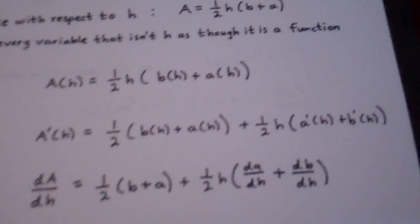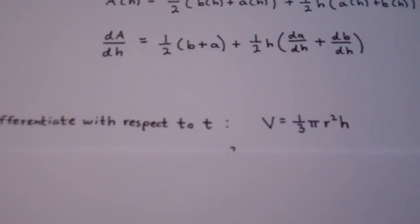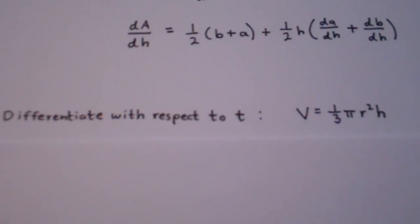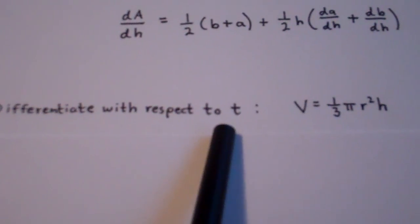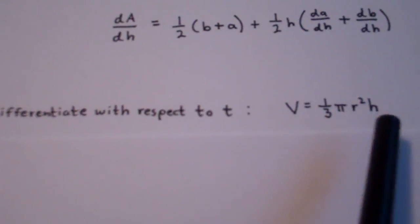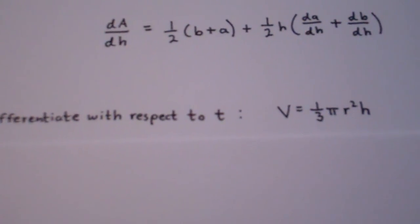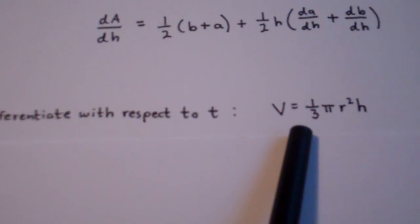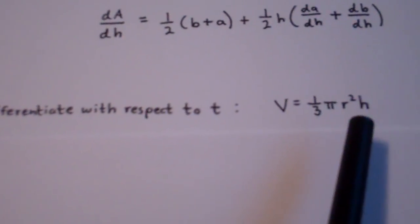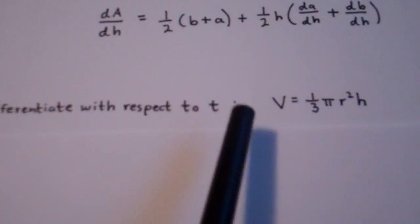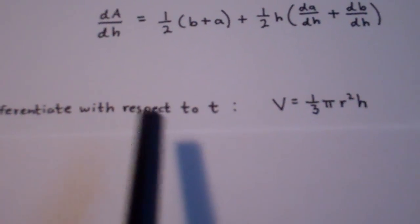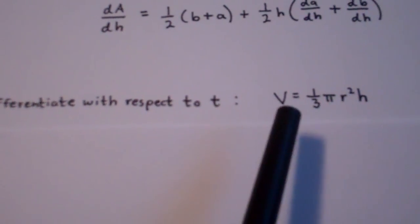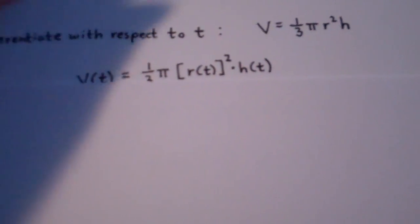Let's do another example. Let's take this equation and differentiate with respect to t. Now this is an interesting one because the variable t doesn't even appear in the formula anywhere. But that's okay — the process still works the same as in the last one. We treat every variable in this formula as though it is a function of t. This is actually the formula for the volume of a cone, and we'll be doing something like this in the next chapter, so it's important that we know how to do this.